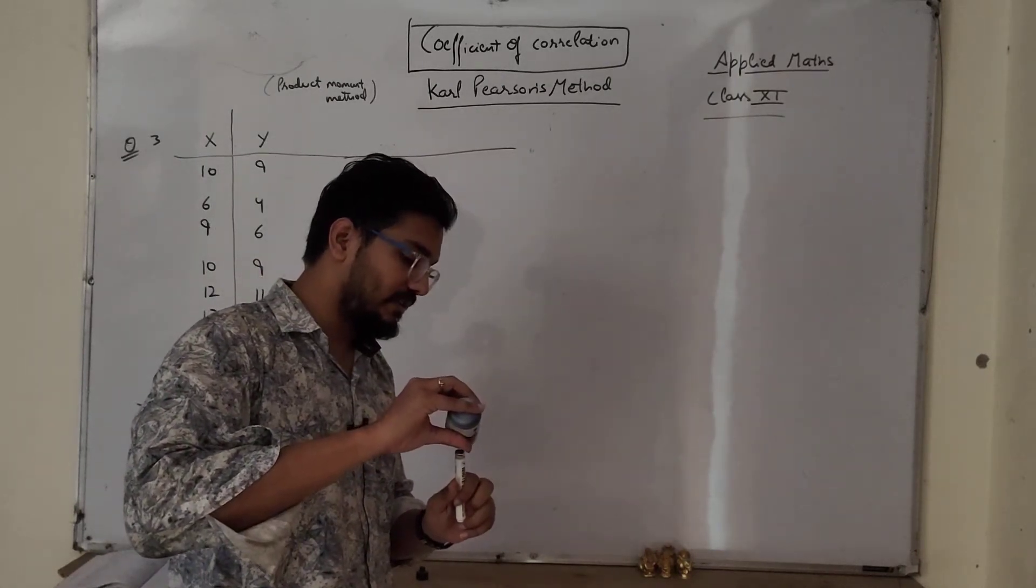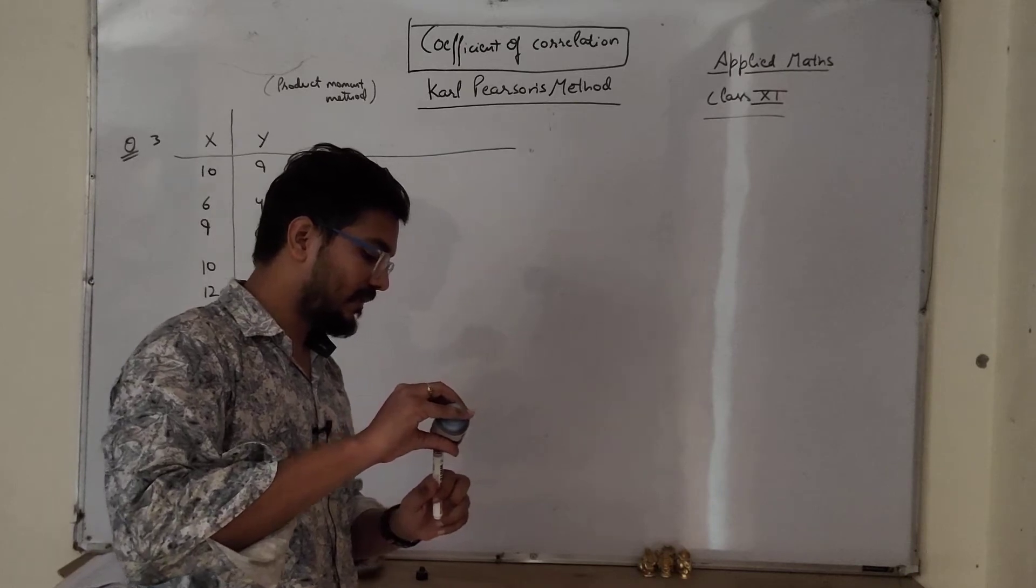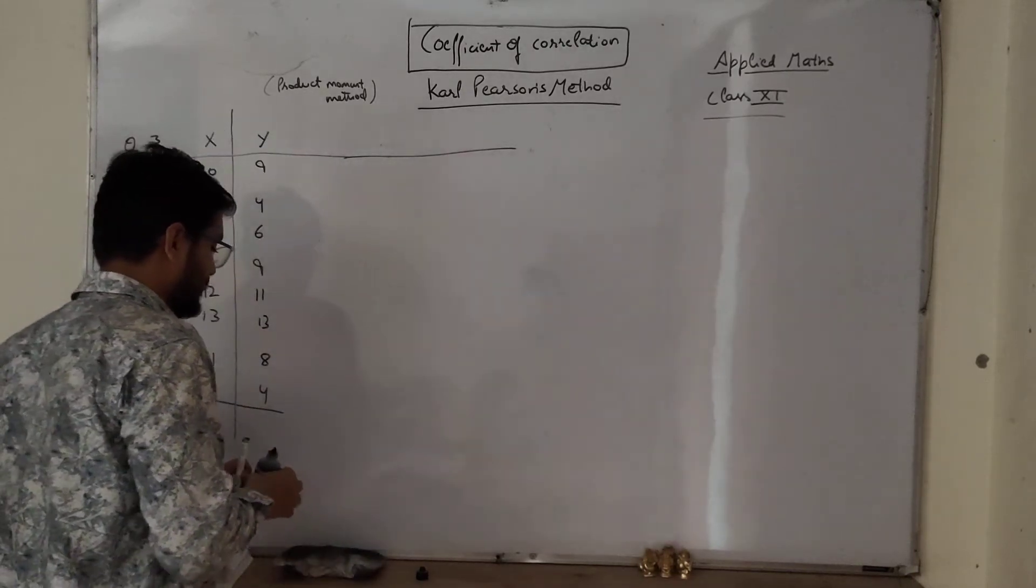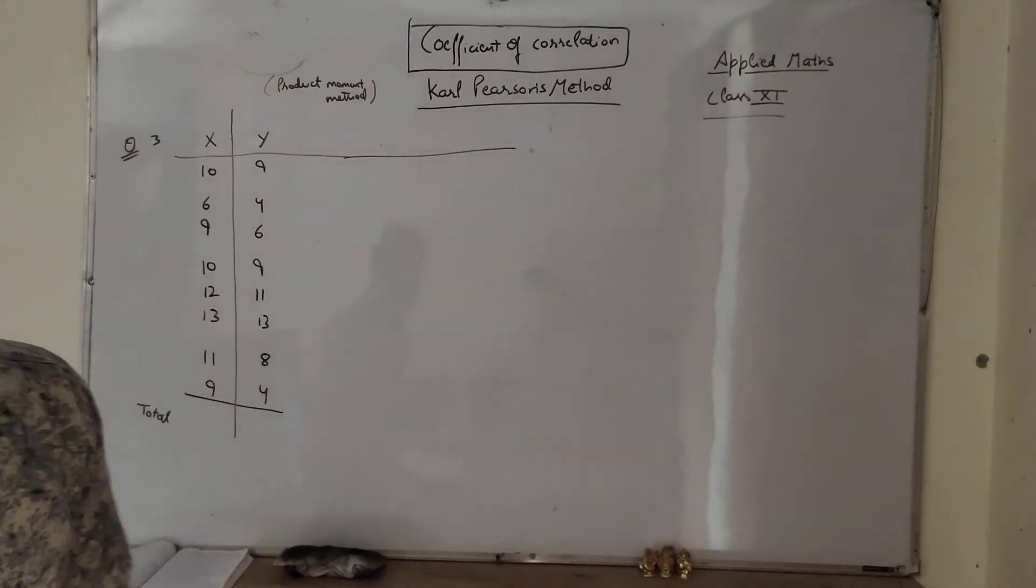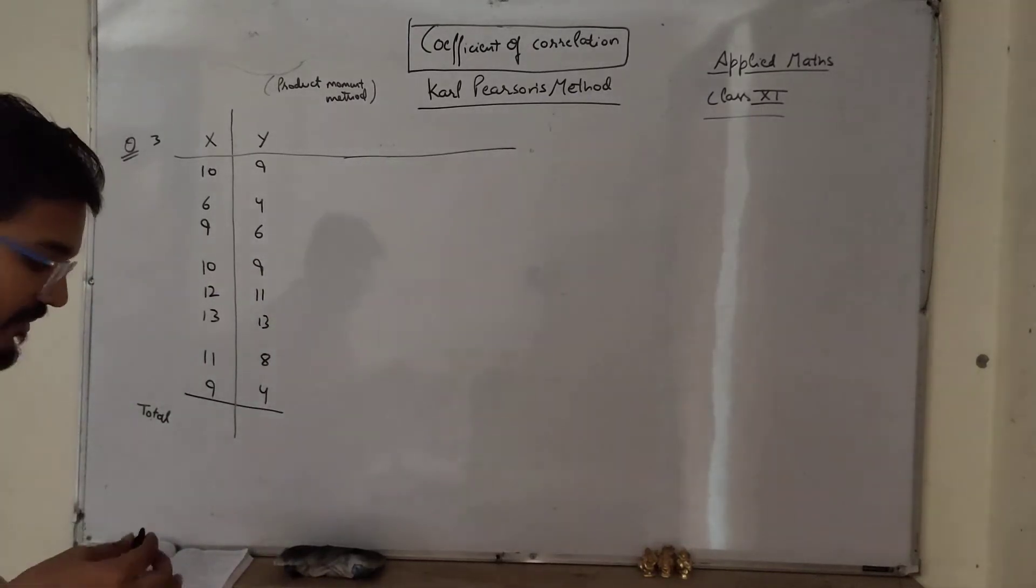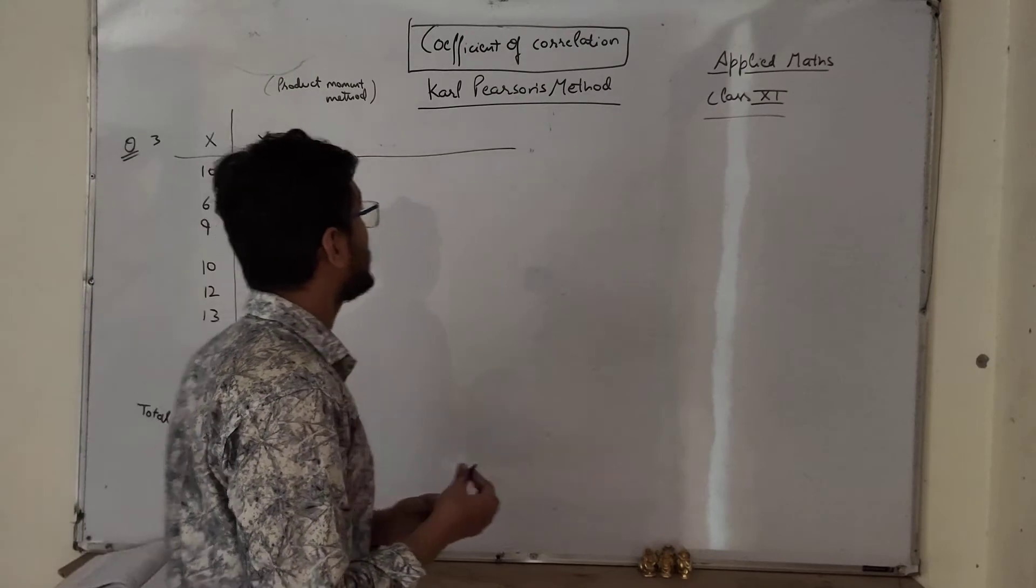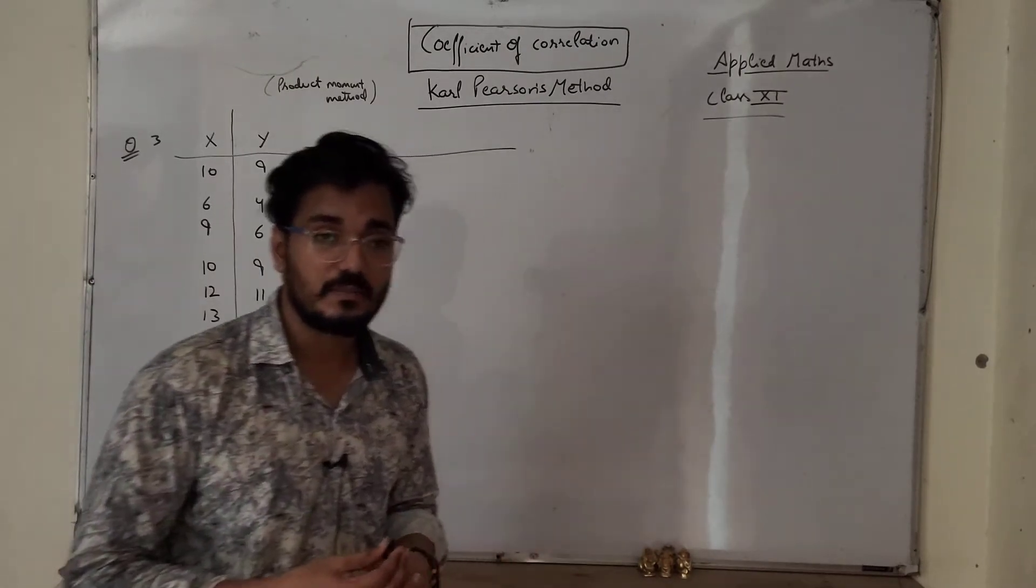The formula is also very easy. This question is given to us, this is question number third. So we have taken our reference question. With the help of it I will explain how to determine coefficient of correlation using Carl Pearson method, very easy.